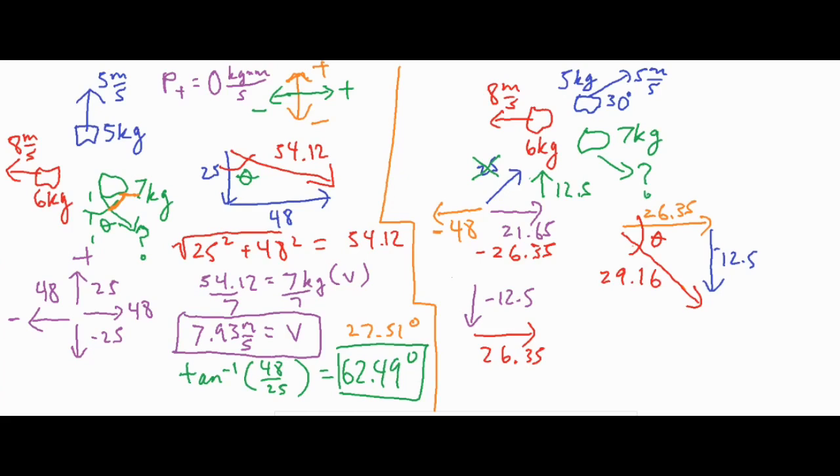That is the momentum of our 7 kilogram object. So if we take 29.16 and set it equal to mass times velocity, we can go ahead and divide both sides by 7. And then our velocity comes out to 4.17 meters per second.